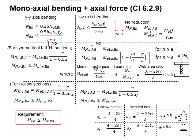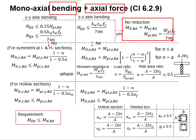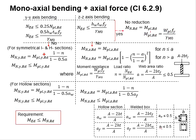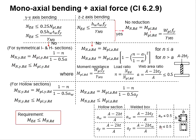Since in the existence of bending and axial force the moment resistance can reduce, the reduced moment should not be greater than the actual moment capacity. The same principle applies to hollow sections.